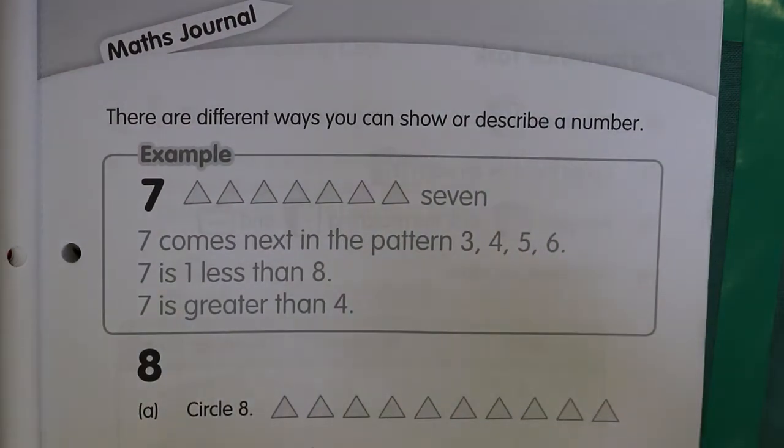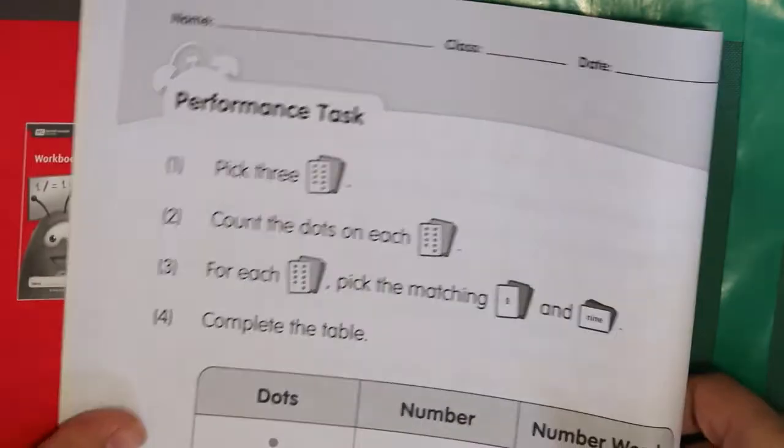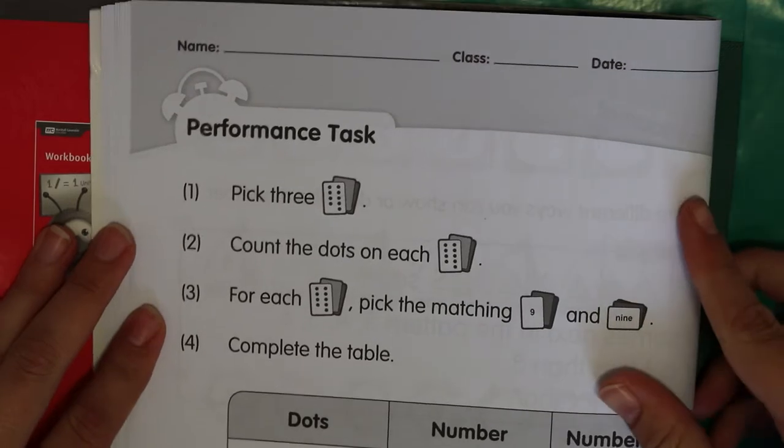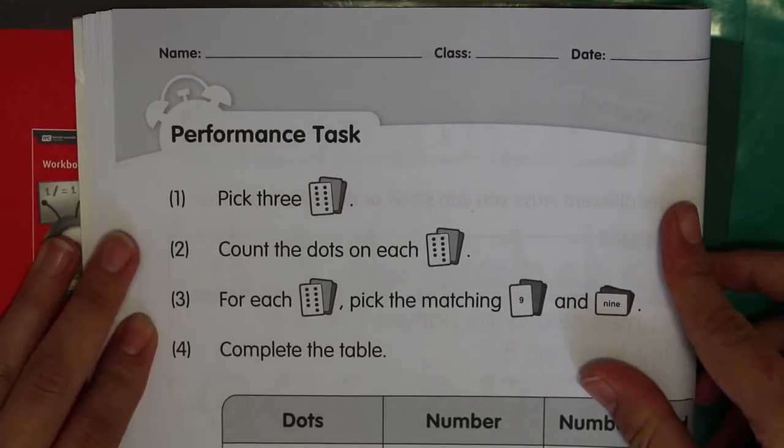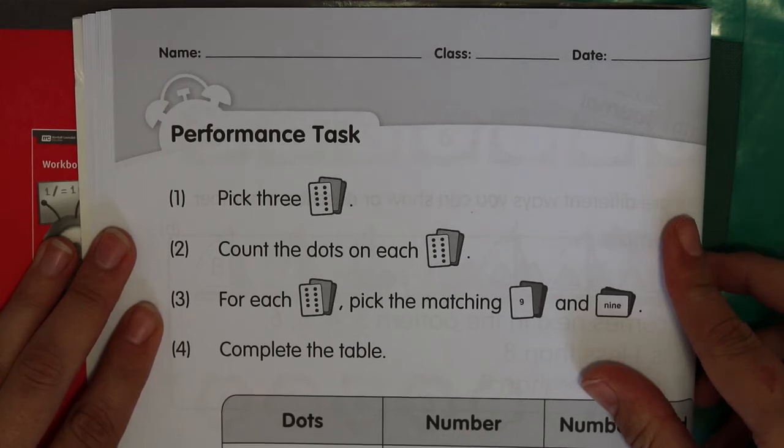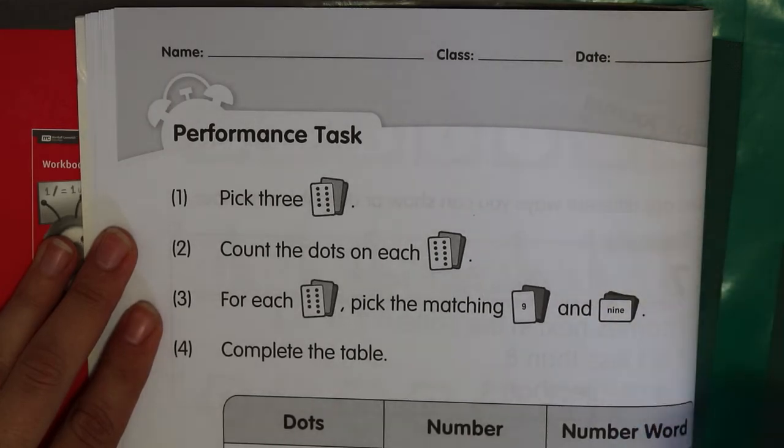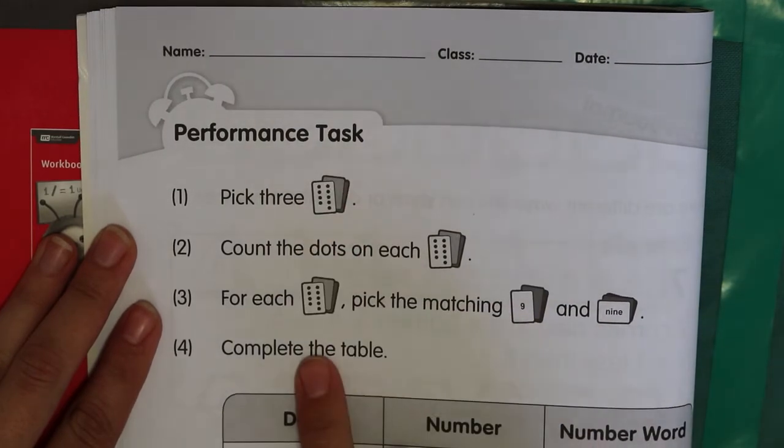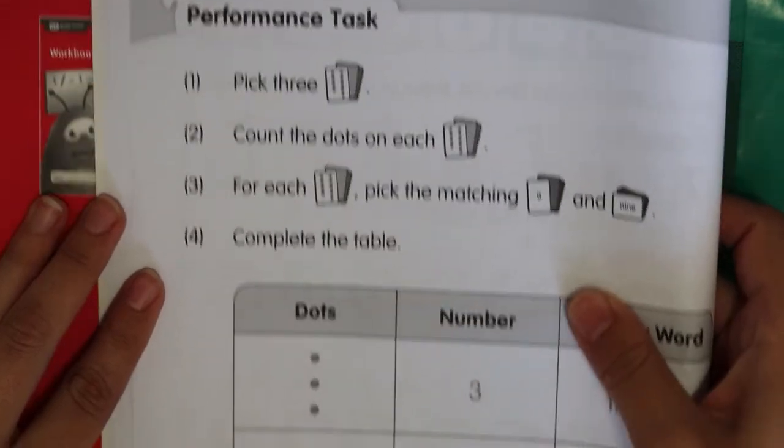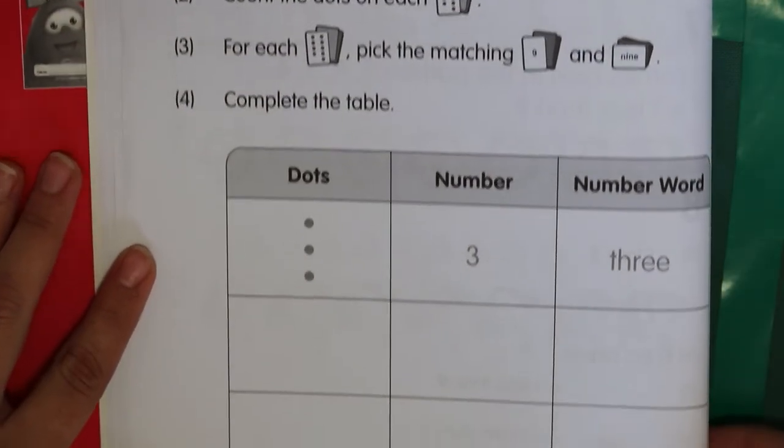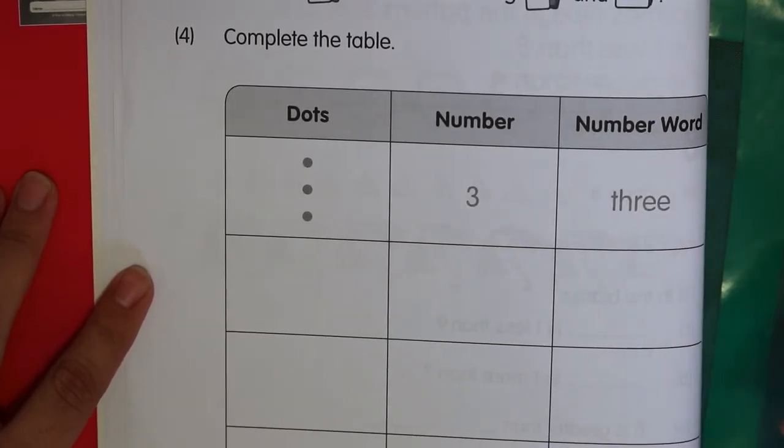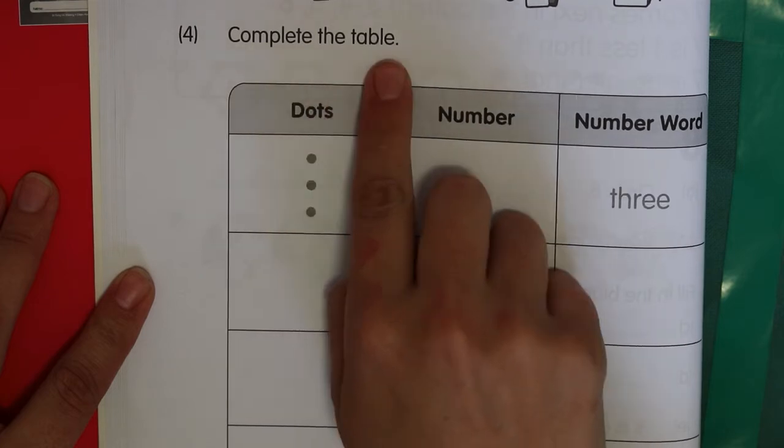Then we're moving on to page 18. This is an activity that we would usually do in class with some dice. So we would throw our dice, and then we would see how many we could do. In class we would have used our dice. So if you do have a dice at home, you can use it. Otherwise you can just make up your own numbers.